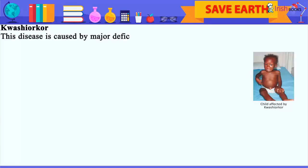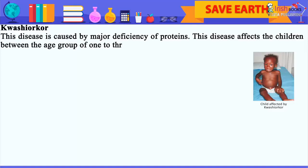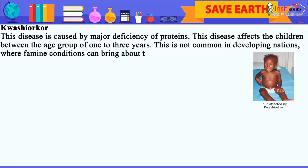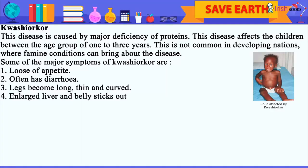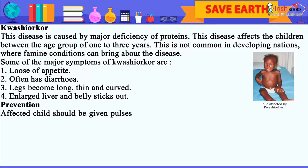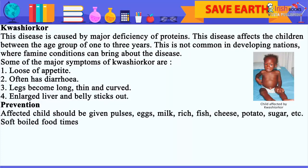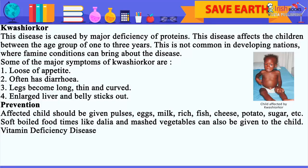Kwashiorkor: This disease is caused by a major deficiency of proteins. It affects children between the age group of 1 to 3 years and is common in developing nations where famine conditions can bring about the disease. Some of the major symptoms of Kwashiorkor are: 1. Loss of appetite. 2. Often has diarrhea. 3. Legs become long, thin and curved. 4. Enlarged liver and belly sticks out. Prevention: The affected child should be given pulses, eggs, milk, fish, cheese, potato, sugar, etc. Soft boiled food items like dalia and mashed vegetables can also be given to the child.